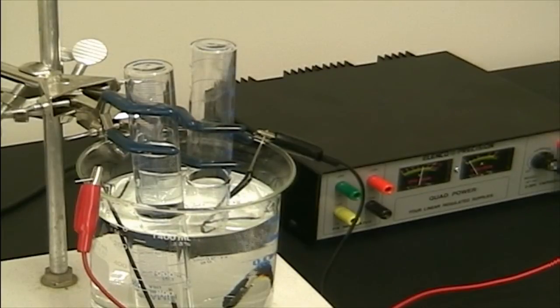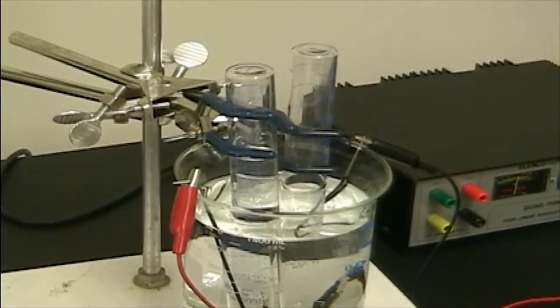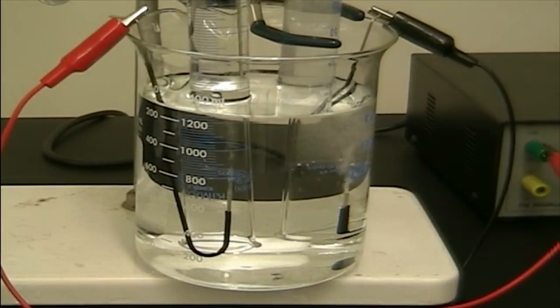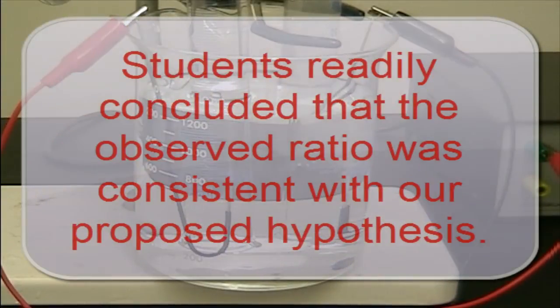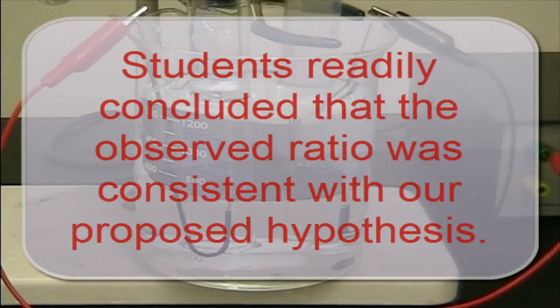At full amperage, and after about 15 minutes, enough hydrogen and oxygen gases had evolved so that their 2 to 1 relative volumes could be clearly observed. When asked to explain this observation, students readily concluded that the observed ratio was consistent with our proposed hypothesis, that hydrogen and oxygen gases are present in a 2 to 1 atomic ratio in water.